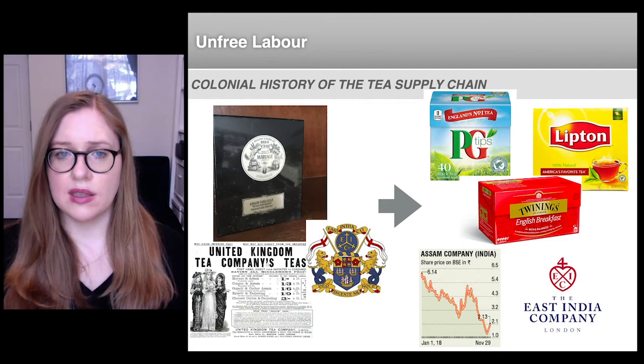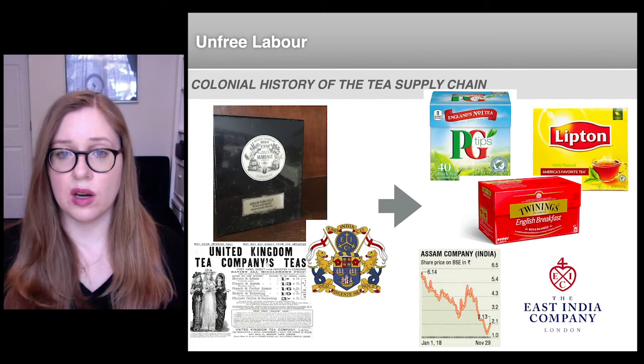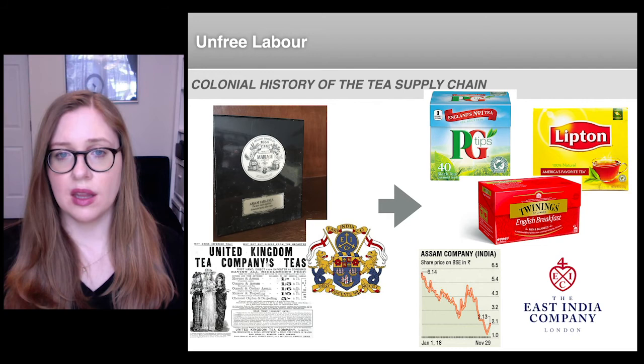The global tea supply chain takes the shape it does today because many of these early tea companies have sold off their tea plantations. They decided that cultivating tea was nowhere near as profitable as marketing and packaging tea, but they continue to hold power and the lion's share of the profit in tea supply chains, and many of the dynamics established on early plantations persist today.